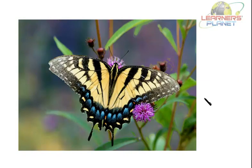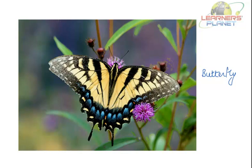Here you can see a beautiful picture of a butterfly. There are several insects and birds which become agents that bring about pollination of flowers, thereby assisting in fruit formation. Butterflies, bees, wasps and hummingbirds are the pollinators. A butterfly is also one of the pollinators, which helps in pollination.